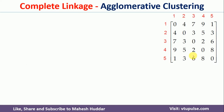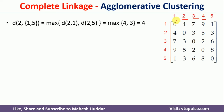Once we group points 1 and 5 into a cluster, we need to calculate the distances from cluster {1,5} to points 2, 3, and 4 using the complete linkage formula — that is, the maximum of the individual distances. The distance from {1,5} to point 2 is the maximum of d(2,1)=4 and d(2,5)=3, which gives 4. The distance from {1,5} to point 3 is the maximum of d(3,1)=7 and d(3,5)=6, which gives 7. The distance from {1,5} to point 4 is 9.